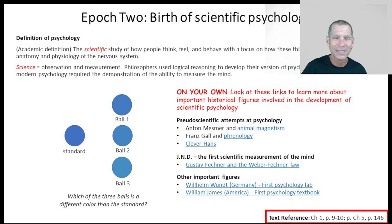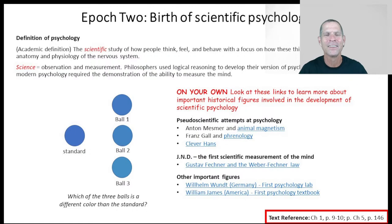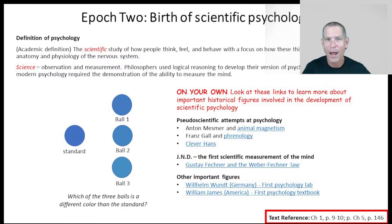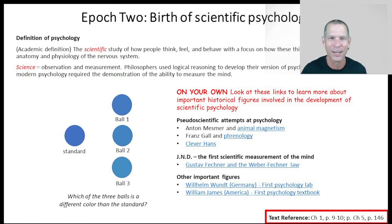I do apologize — in the 19th century, females were not really accepted into the professional sciences, so you're not going to find a lot of mothers of psychology in the 19th century. We're going to have some very important women appearing in the 20th century. In the 19th century, most of the early psychologists were white male Europeans. But I want you to appreciate how these three men helped give birth to this scientific thing called psychology.